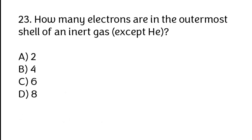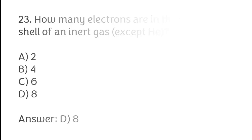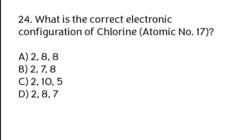How many electrons are in the outermost shell of an inert gas except helium? Correct answer is D. Eight.